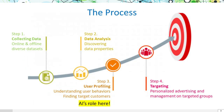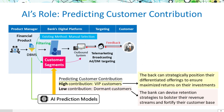In financial precision marketing, we start by collecting varied data, then analyze it to understand patterns. AI becomes crucial in user profiling, helping identify target customers. Finally, we engage these targets with personalized advertising, about the role of AI in enhancing customer segmentation.